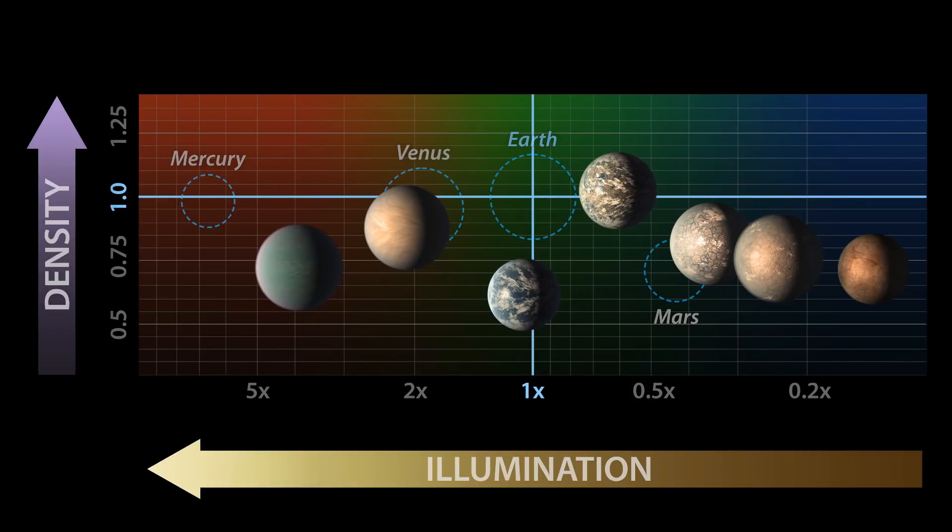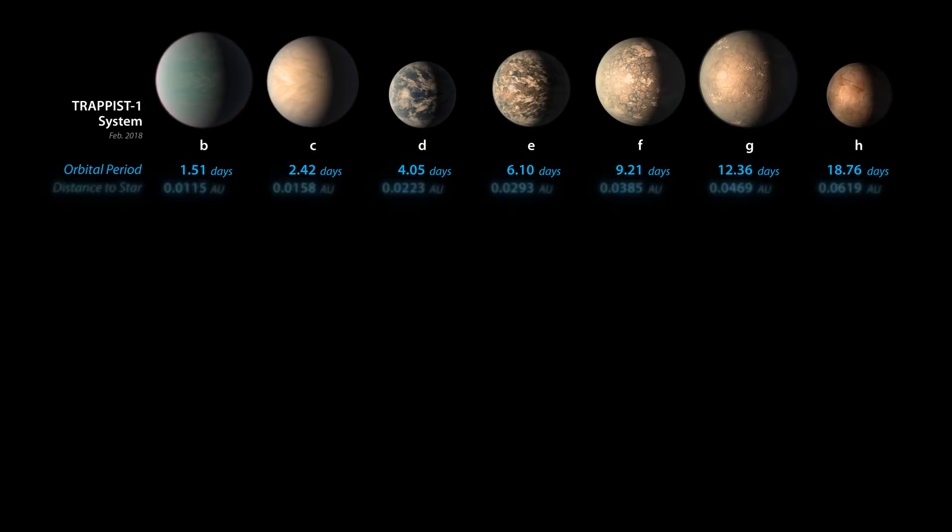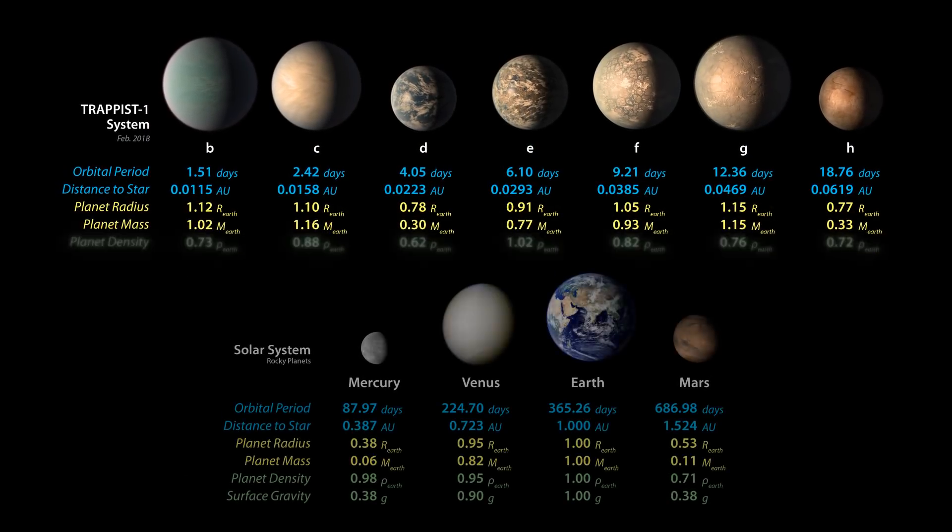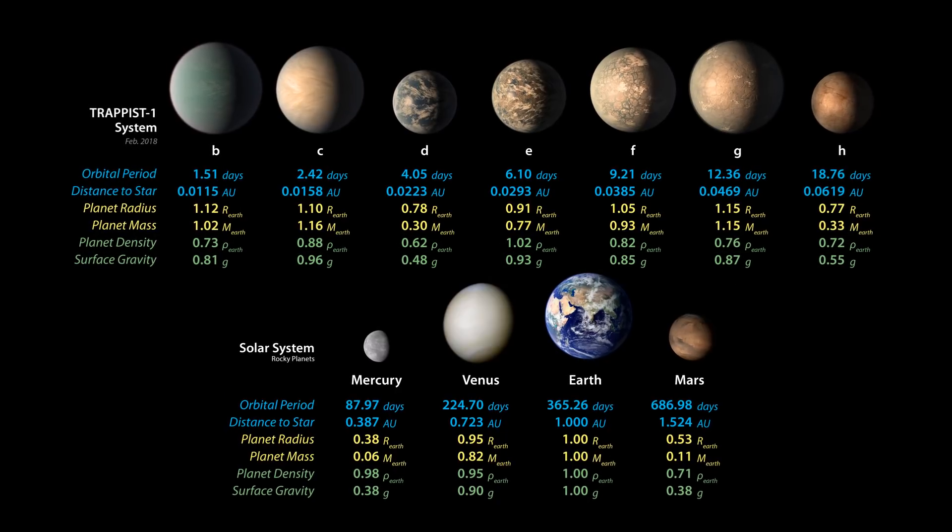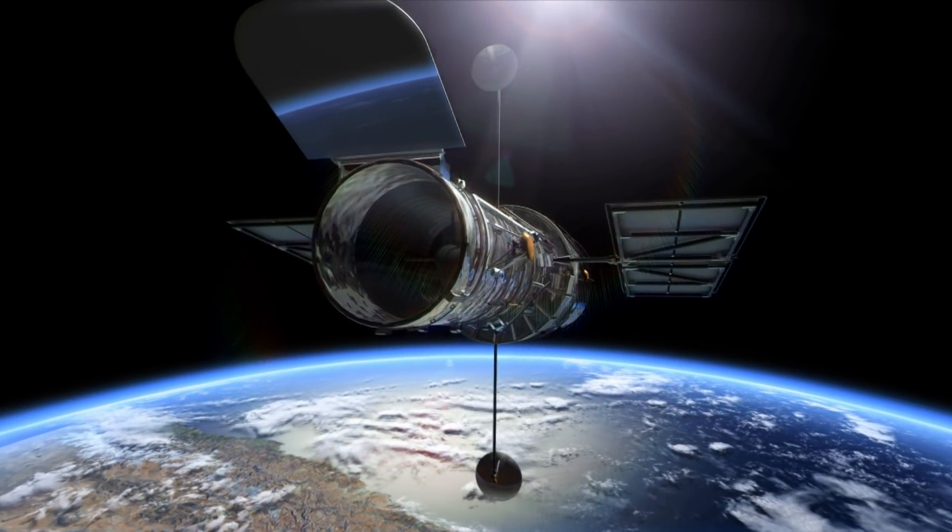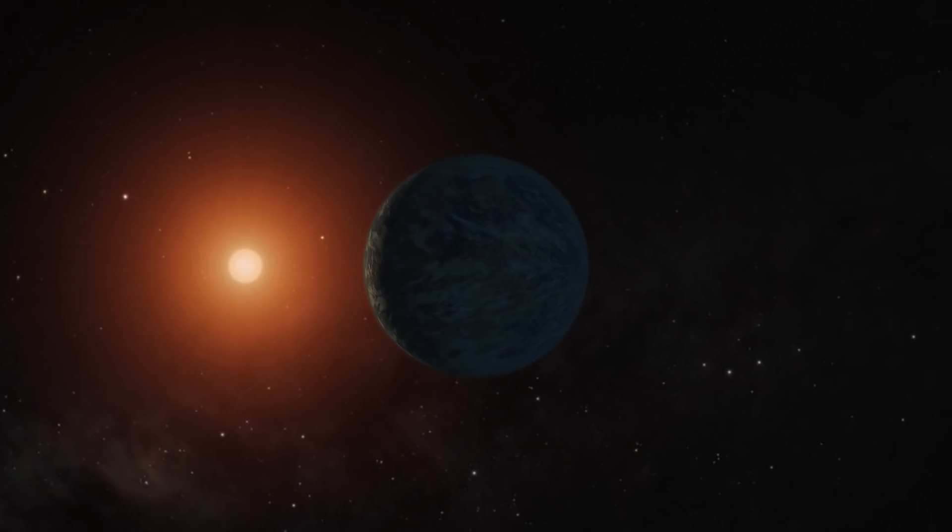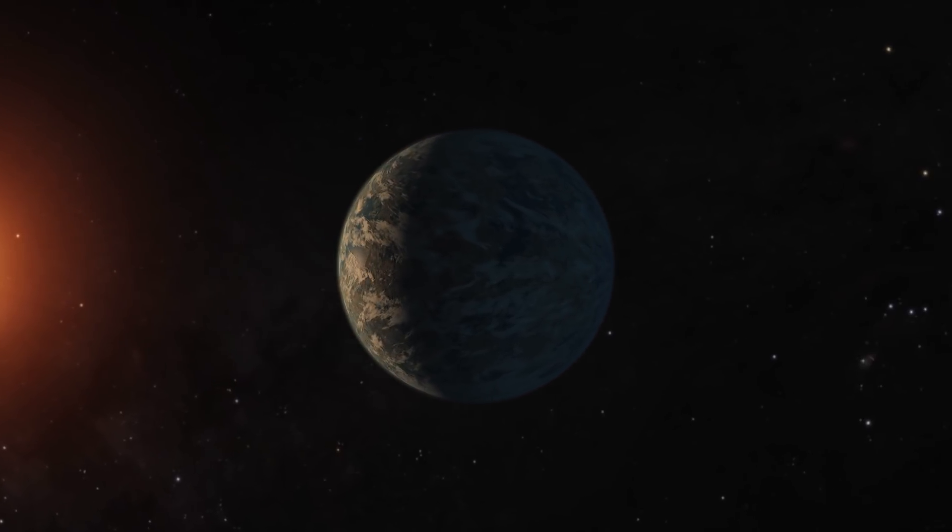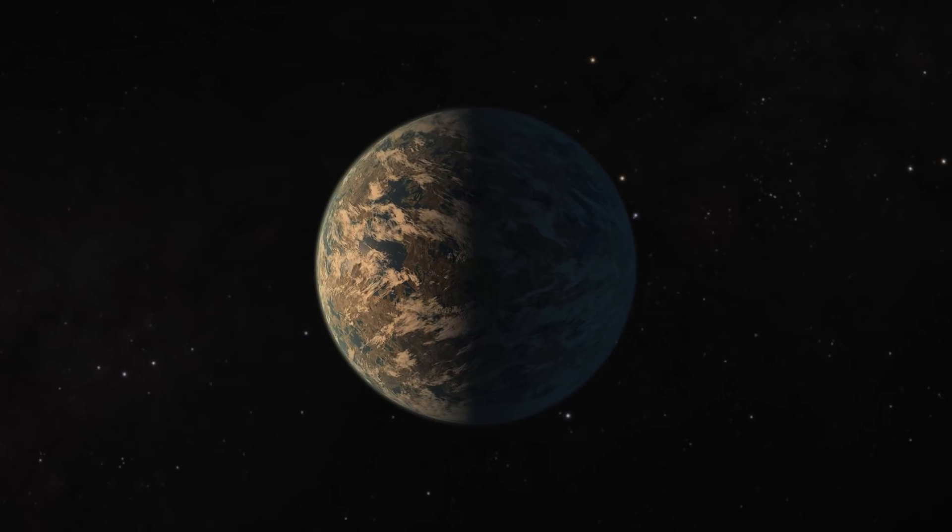Remarkably, we now know more about TRAPPIST-1 than any other planetary system besides our own. And we are still learning more. Hubble has been able to rule out puffy, hydrogen-rich atmospheres around five of these planets so far, strengthening the conclusion that they are rocky and potentially rich with water.